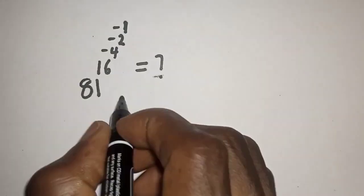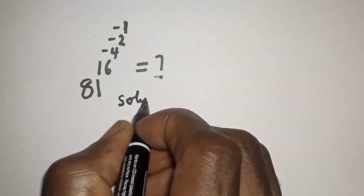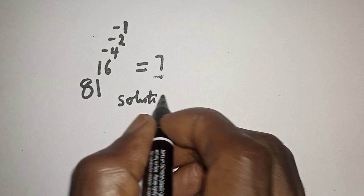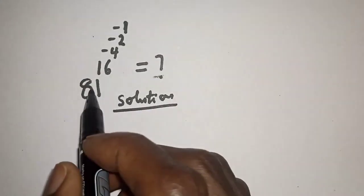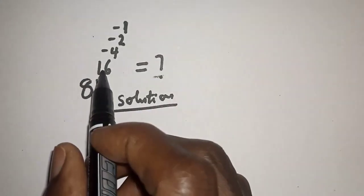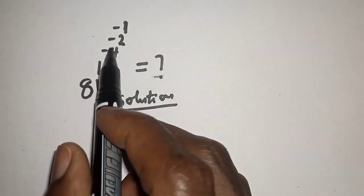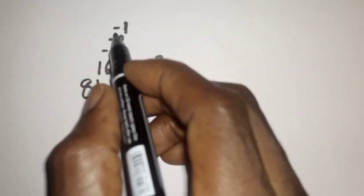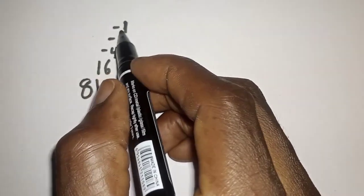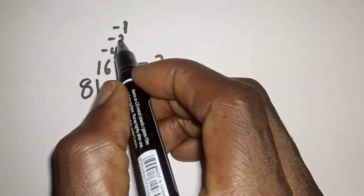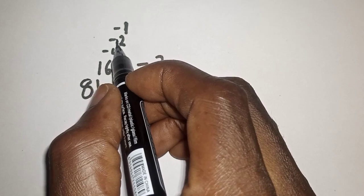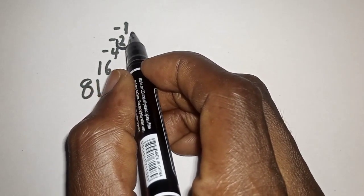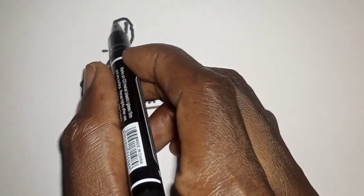Solution. We have 81 raised to power 16 raised to power minus 4 raised to power minus 2 raised to power minus 1. We work with the innermost exponent first: 2 raised to power minus 1.